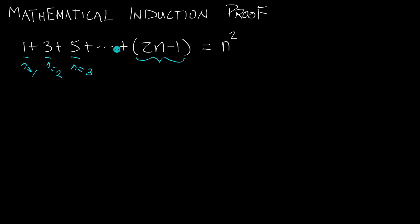To say it goes all the way up to 2n minus 1 — that's just for some arbitrary n. n could be 6, n could be 25. We can pick whatever we want for n, and whatever that number is, we add up the terms for n=1, 2, 3, 4, all the way up to 25 if that's what we chose.